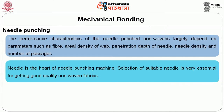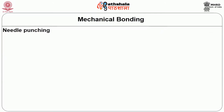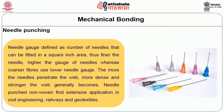The needle is the heart of the needle punching machine. Selection of a suitable needle is very essential for getting good quality non-woven fabrics. Needles are generally triangular in cross-section and carry barbs; the dimension of the barbs and their relative arrangement depend on the non-woven application and machine operation. Needle gauge is defined as the number of needles that can be fitted in a square inch area — thus, finer needles have higher gauge, whereas coarser fibers use low needle gauge. The more needles penetrate the web, the more dense and stronger the web generally becomes. Needle-punched non-wovens find extensive application in civil engineering, railways, and geotextiles.